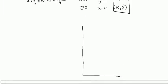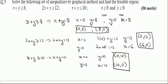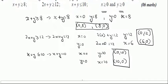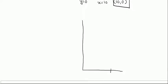Drawing the y-axis and x-axis, I start with the first line. The first line passes through (0,8) and (8,0). At the y-axis x is always 0, and at the x-axis y is always 0. So this point is (8,0) and this point is (0,8). My first line goes between these two points.